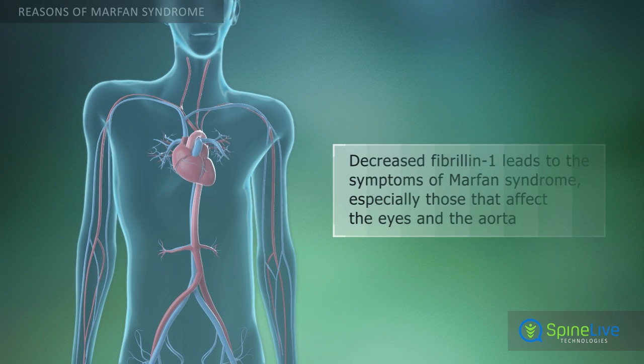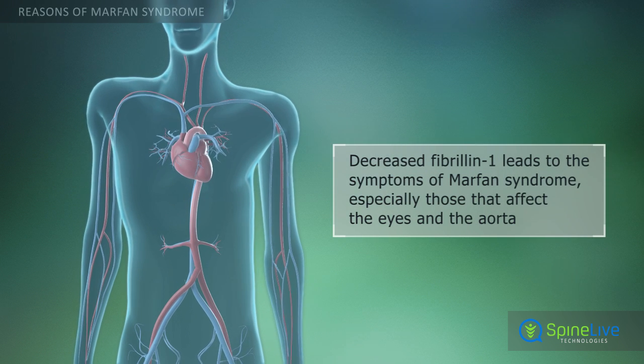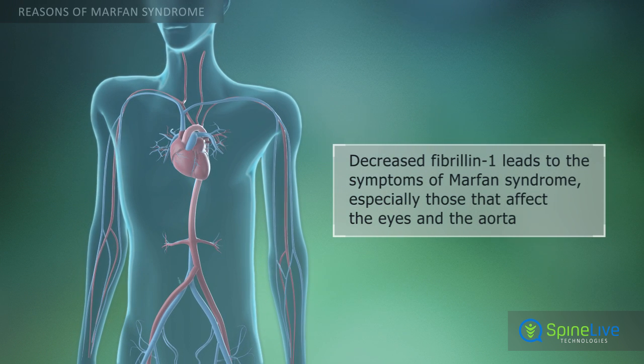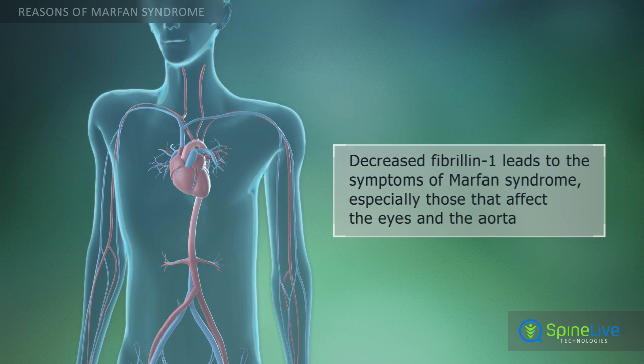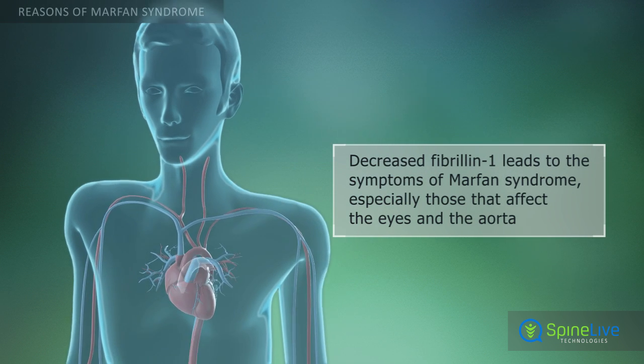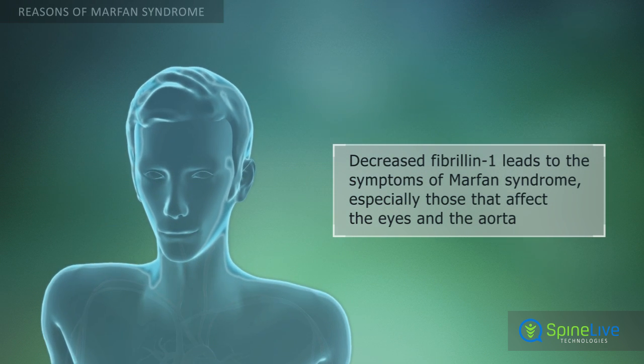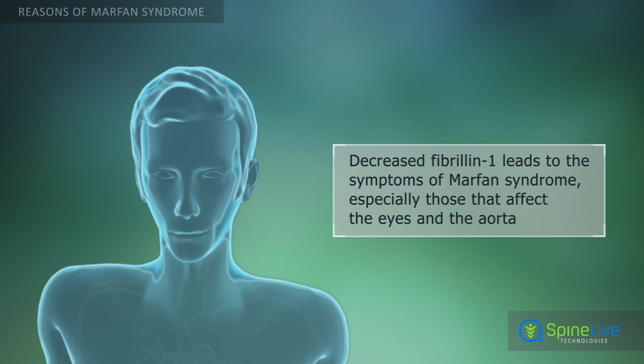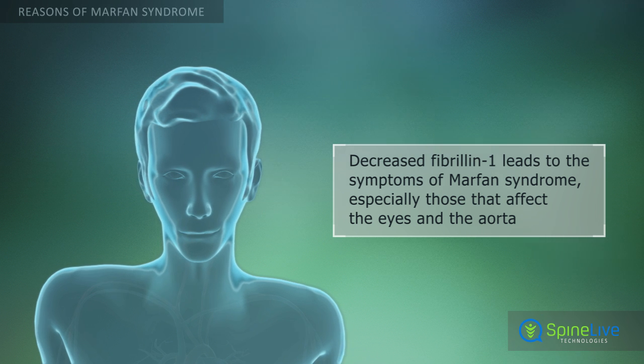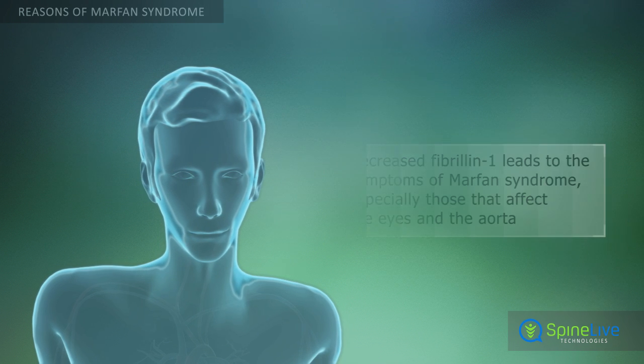Changes in connective tissues lead to the unique characteristics and symptoms of Marfan syndrome, especially those that affect the eyes, aorta, and the heart.